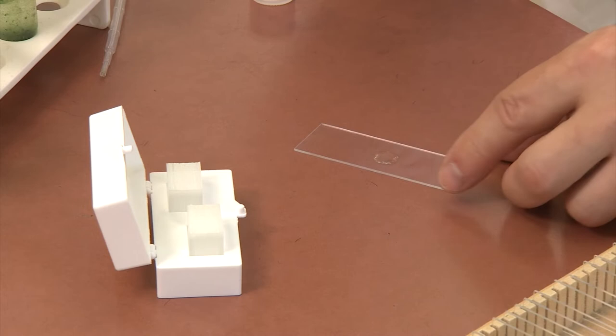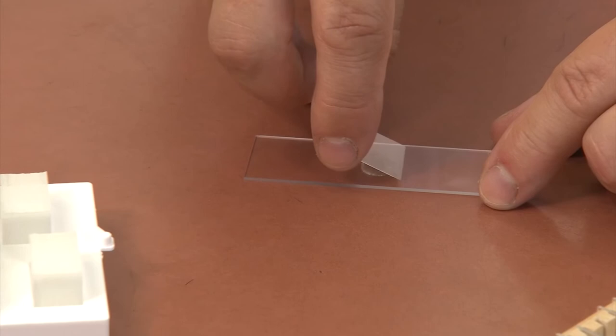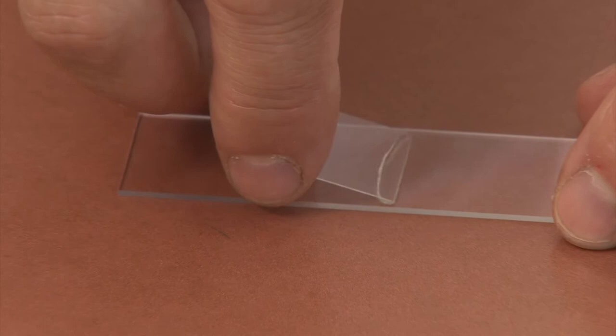While holding the coverslip at 45 degrees, touch the bottom edge to the slide at the edge of the drop of anabina. Slowly lower the outer edge of the coverslip onto the sample. If you need to, use a dissection needle to lower the coverslip edge.